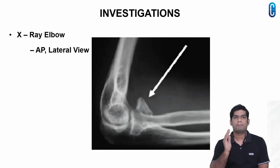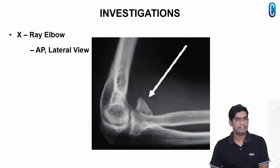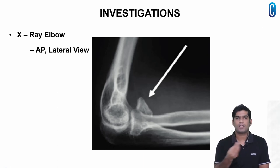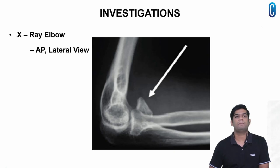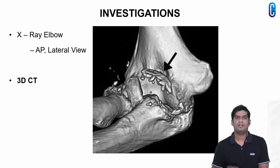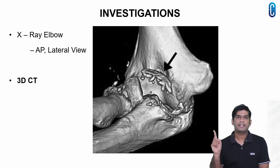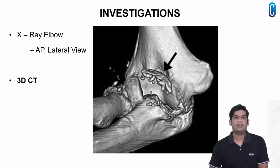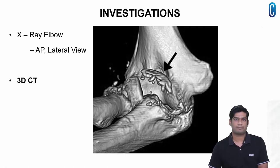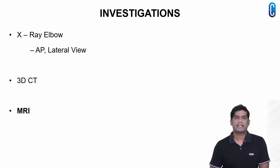For diagnosis, a plain anteroposterior and lateral X-ray of the elbow is needed. But sometimes small fractures or even some smaller associated fractures may be difficult to visualize on plain X-ray. So for bony detail, a CT could be taken. This is a three-dimensional CT scan of the anteromedial coronoid fracture — the fracture line indicates the fragment. MRI is taken if ligamentous injury is suspected.